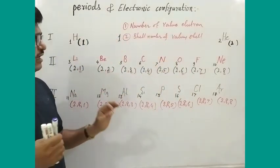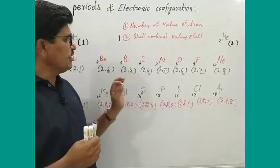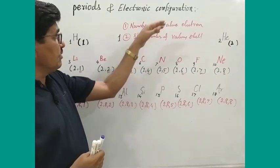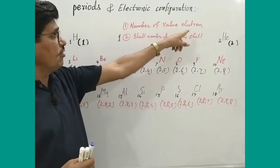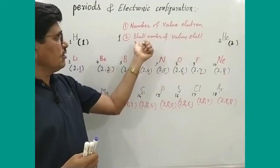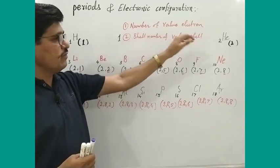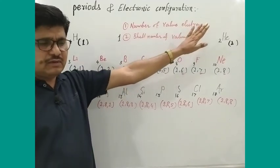The chemical reactivity of any element is determined by the number of valence electrons and the shell number.